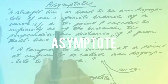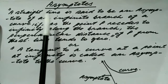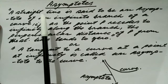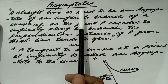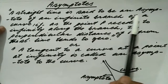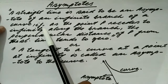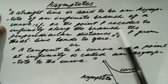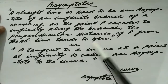In this video I'll tell you what is an asymptote, the different kinds of asymptotes, and how to find asymptotes to a given curve. A straight line is said to be an asymptote of an infinite branch of a curve if, as a point P recedes to infinity along the branch, the perpendicular distance of P from the straight line tends to zero.